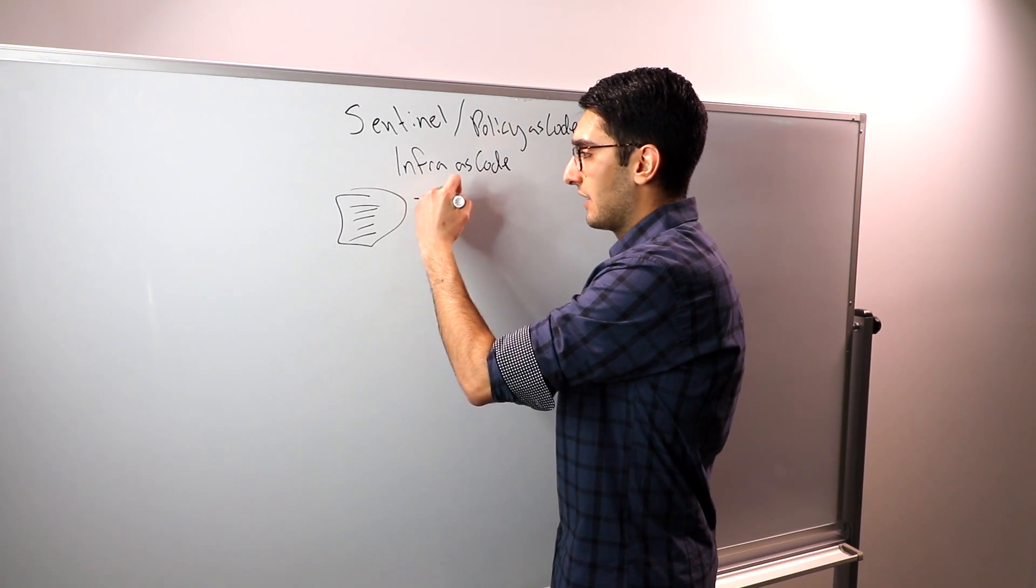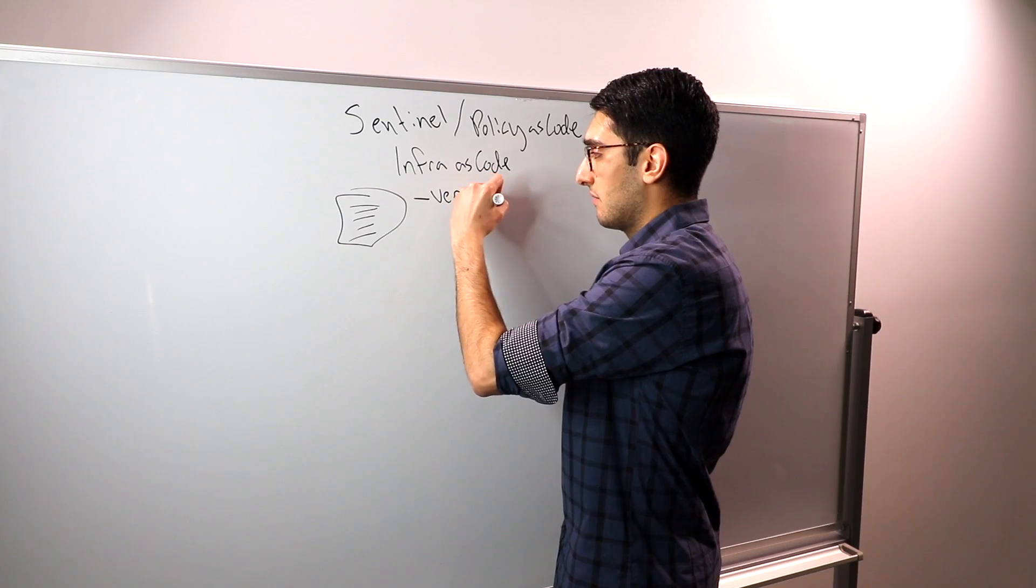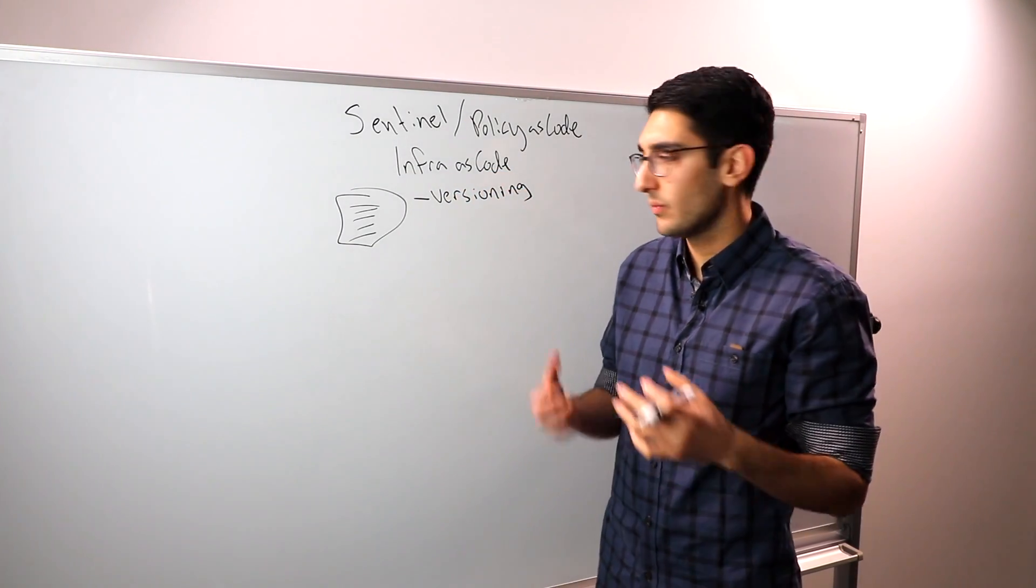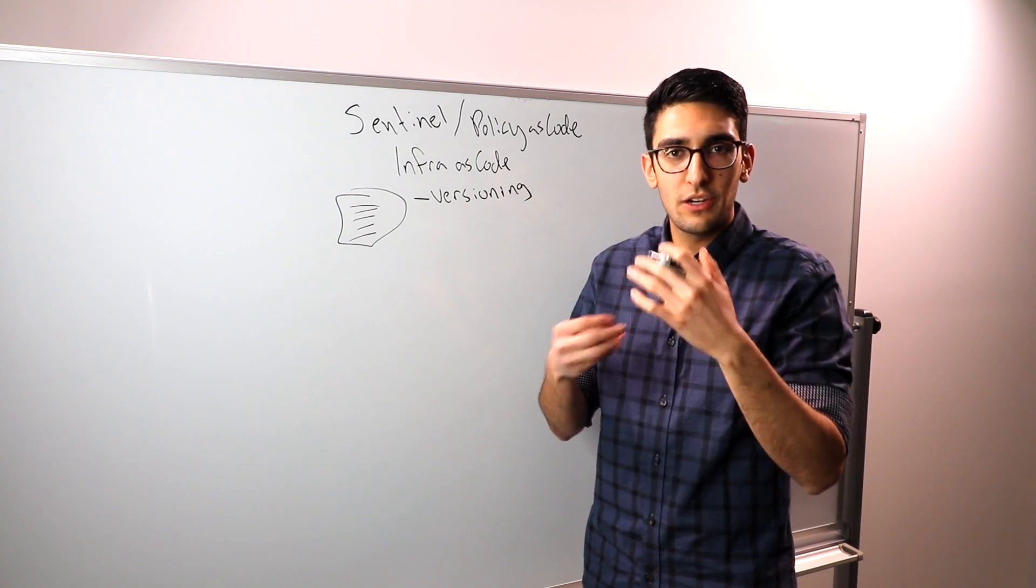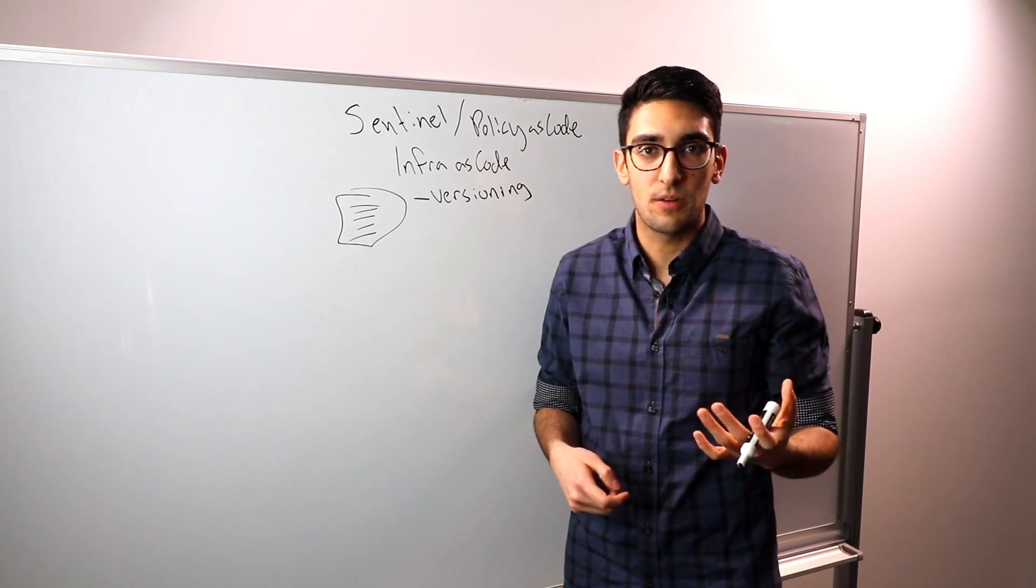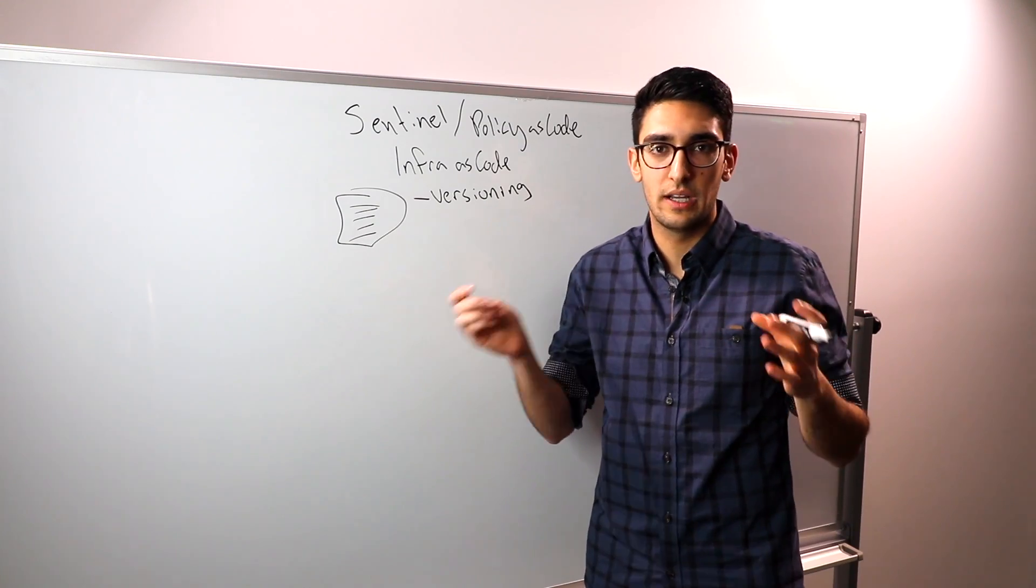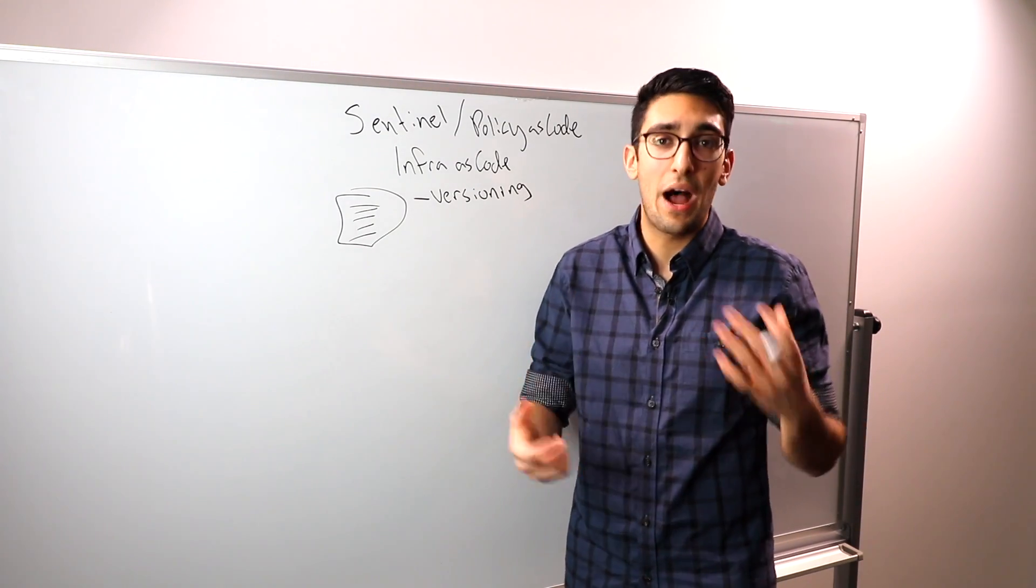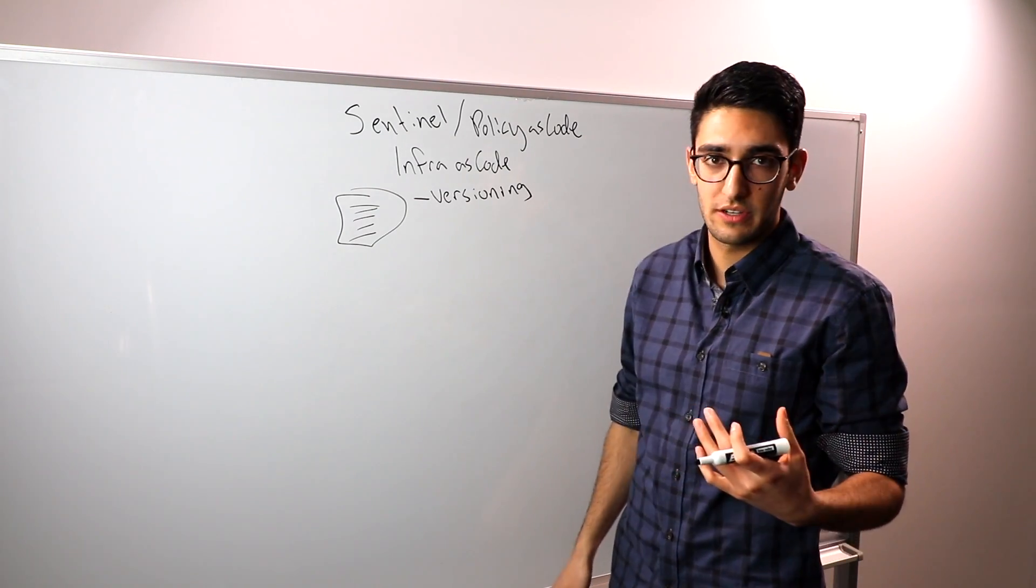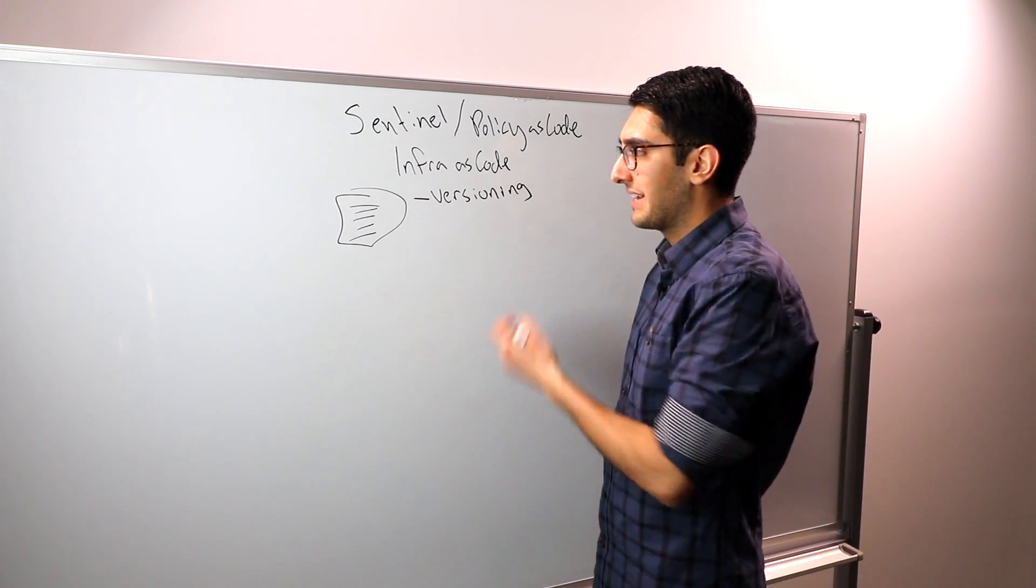One, we can check it in and use version control systems. So we get versioning for free. As we define our application, we check it in, and as we make incremental changes to it, we continue to check it in, much like we would do for an application. This gives us a change history of who changed what, along with commit messages and why they changed, and gives us a better idea of why our infrastructure has evolved in a certain way.